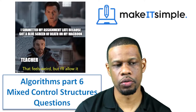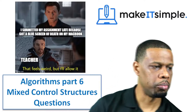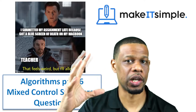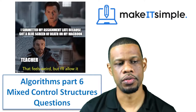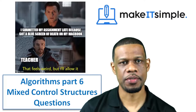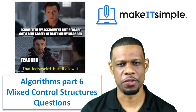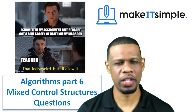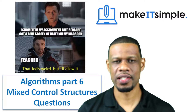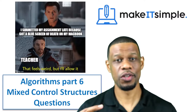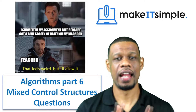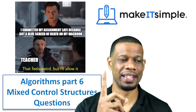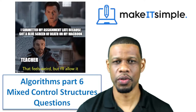Tonight I am going to do Mixed Control Structures Questions, and this is the pinnacle of your algorithm knowledge that you should be able to do. These types of questions are the ones that more than likely you will have to do for your SBA or the types of questions you'll get in a Paper 3. You might get questions like these in a Paper 2 as well, but it won't be as hard. These questions will test to see if you really know how to do algorithms properly, and they'll give you a little insight on if you're capable of doing computer science.